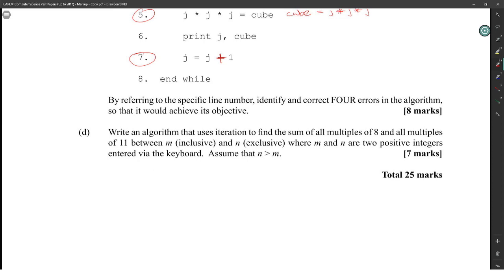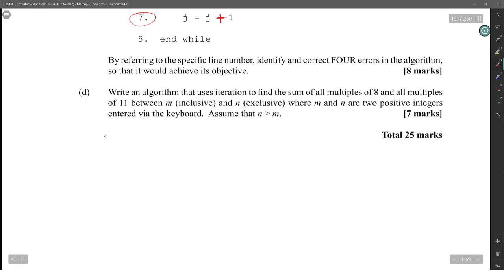Next would be write an algorithm that uses iteration to find sum of all multiples of 8 and all multiples of 11 between M and N exclusive. We're going to write an algorithm to find only multiples of 8. So we're going to go for C is equal to between M to N exclusive. So we have to go to N minus 1 because we can't include N. So for C is equal to M to N minus 1, do, that will be the exclusive there. Where M and N are both positive integers. So N minus 1, that will be the exclusive part. Now we have to find the sum of all the multiples of 8 and all the multiples of 11. So we're going to say if C mod 8 is equal to 0 or C mod 11 is equal to 0, then sum is equal to sum plus C.